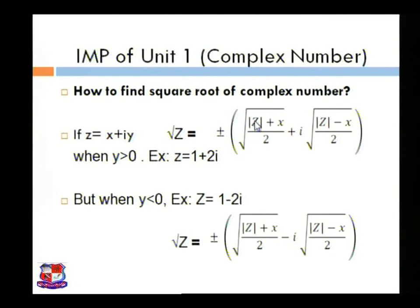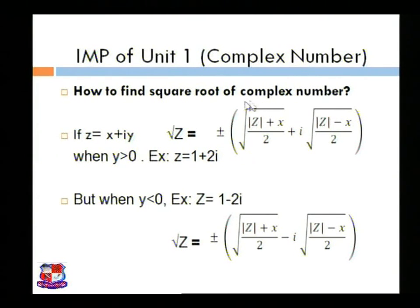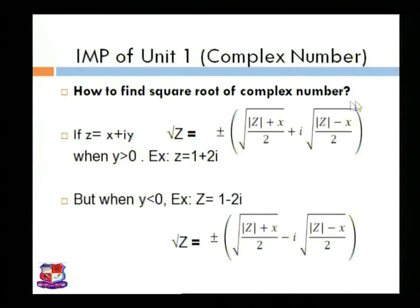Next, we already discussed the square root of a complex number. If z is equal to x plus iy, then the square root of z is equal to plus or minus: under root of (modulus of z plus x) divided by 2, plus i times under root of (modulus of z minus x) divided by 2, when y is greater than 0, and minus i when y is less than 0.